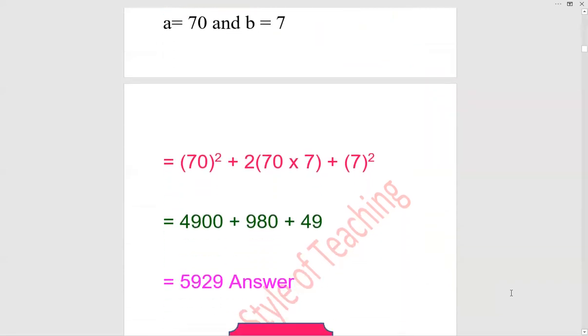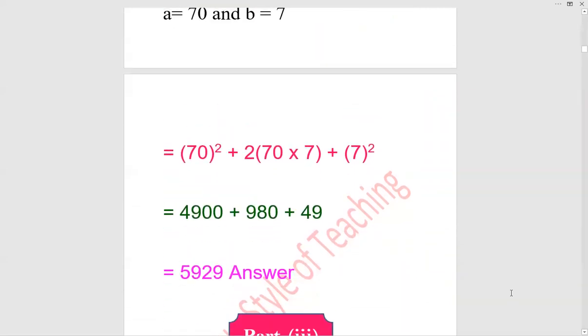70² is 4900, 2 × 70 × 7 is 980, plus 7² is 49. Sum up these numbers, the answer is 5929.